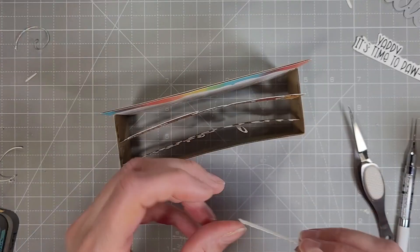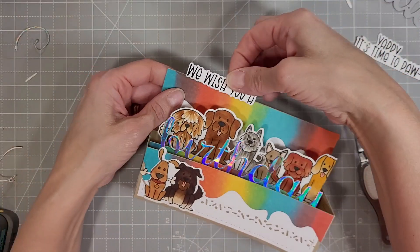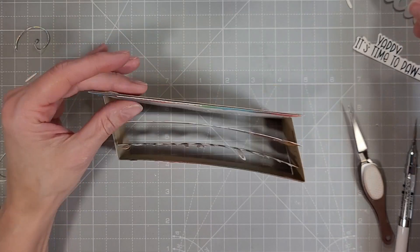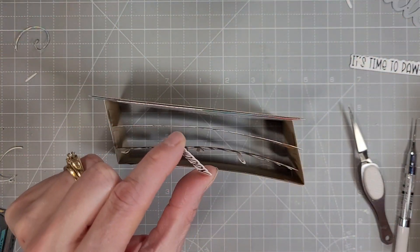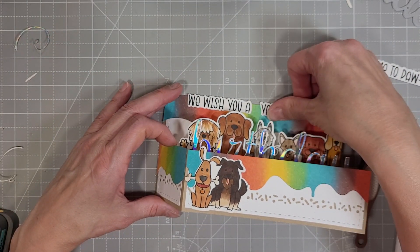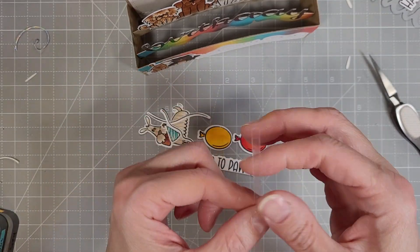Then we're going to add our smaller sentiment pieces. We'll add the we wish you a yappy to the top of the back panel so that you can read the sentiment down the front of the card. And I did not center these completely. You sure could but I decided to add a balloon to the front also.